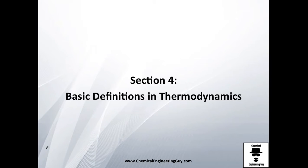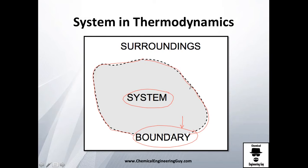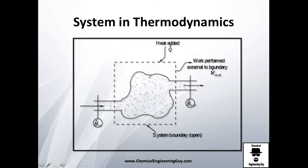Let's start with section four: basic definitions in thermodynamics. First, what's a system? In thermodynamics, a system is our study piece of material. We define a boundary — which normally has no physical value — and then our surroundings. All together, this makes our universe. So you can say the universe is essentially system plus surroundings.